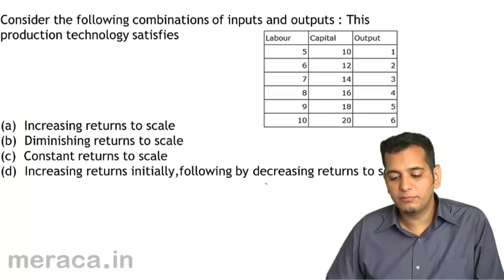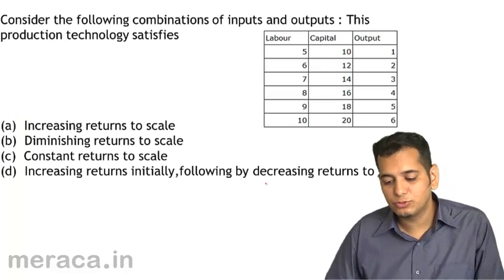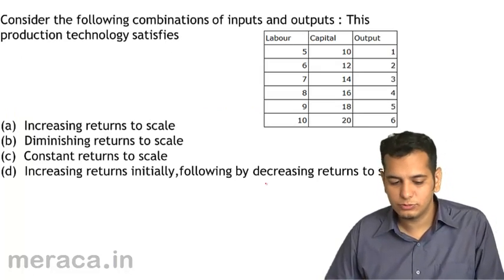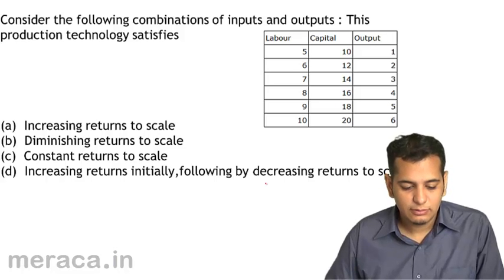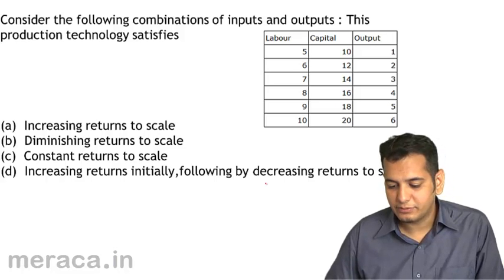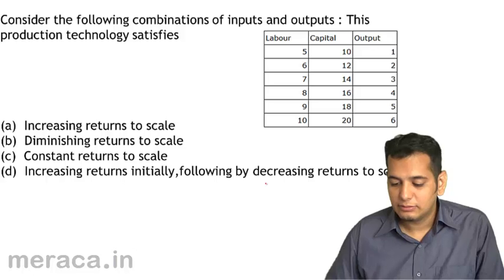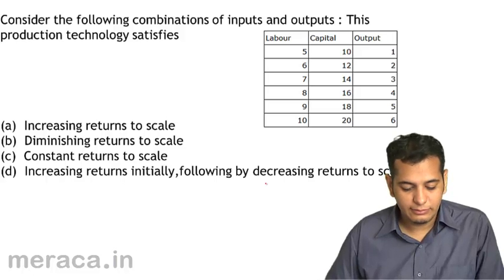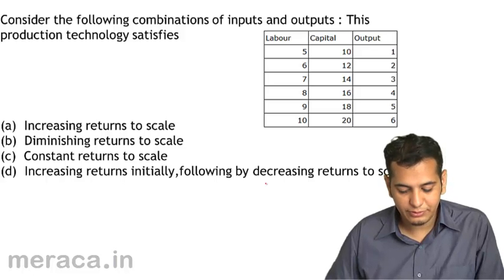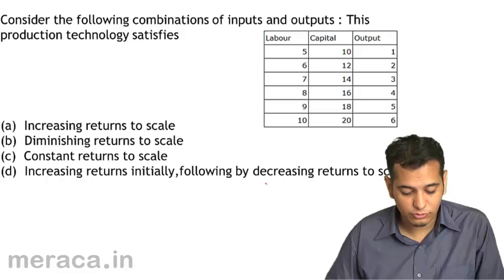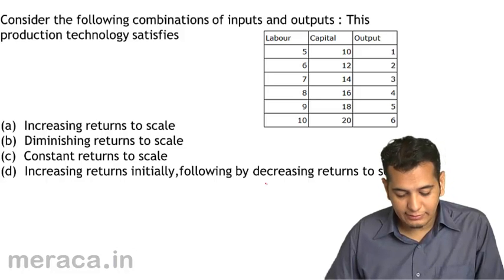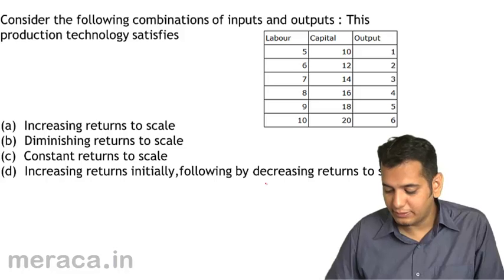Consider the following combinations of inputs and outputs. This production technology satisfies: a) increasing returns to scale, b) diminishing returns to scale then constant returns to scale, or c) increasing returns initially followed by decreasing returns to scale.